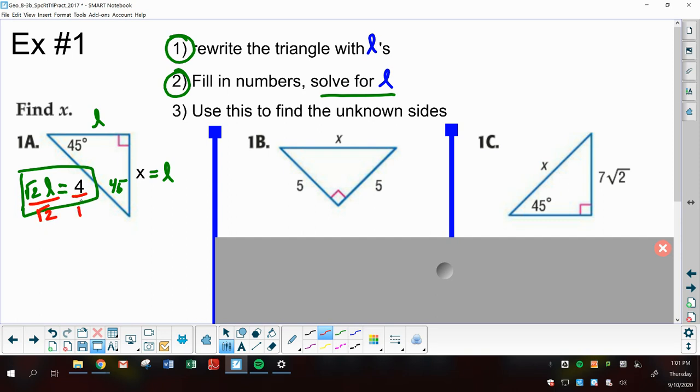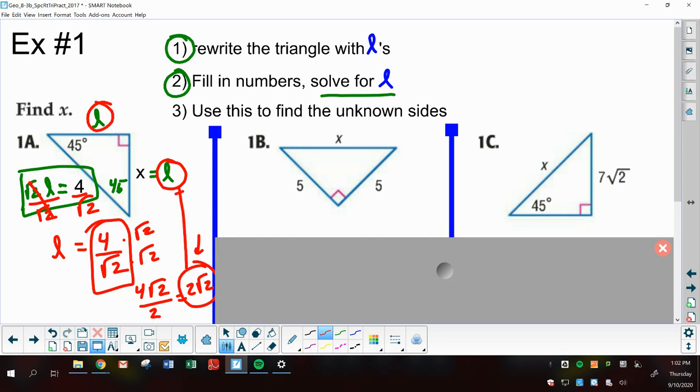And once again, if I'm going too fast, just pause the video. Rewrite the triangles with the Ls. So this is the L side, or X. This is also the L side. This side here is the square root of 2L, or L times the square root of 2. Then I need to find the side with the numbers and solve for L. Well, this is the only side that has a number. So this is the side I'm going to solve for L. So to solve for L, I'm going to divide by the square root of 2.